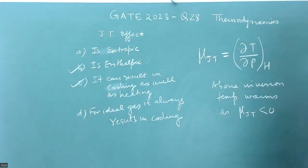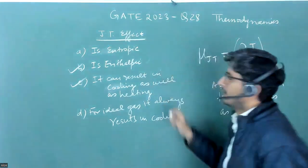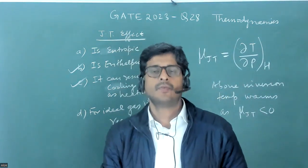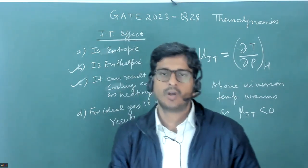This is a question from GATE 2023, question number 28, from thermodynamics, about the Joule-Thompson effect. The Joule-Thompson effect is the change in fluid temperature when a fluid passes from higher pressure to lower pressure.